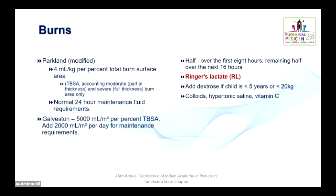For burns in the past 24 hours, the modified Parkland formula is used: 4 ml/kg × total burn surface area (TBSA), calculated for second and third degree burns only, along with normal 24-hour maintenance fluid. Another method is the Galveston formula: 5000 ml/m² per body surface area burned plus 2000 ml/m² for maintenance. Half the fluid is given over the first 8 hours; the remaining half over the next 16 hours. The fluid of choice is Ringer's lactate; for children under 5 years or under 20 kg, dextrose can be added. Use of colloids, hypertonic saline, or high-dose vitamin C in burns is still under research.